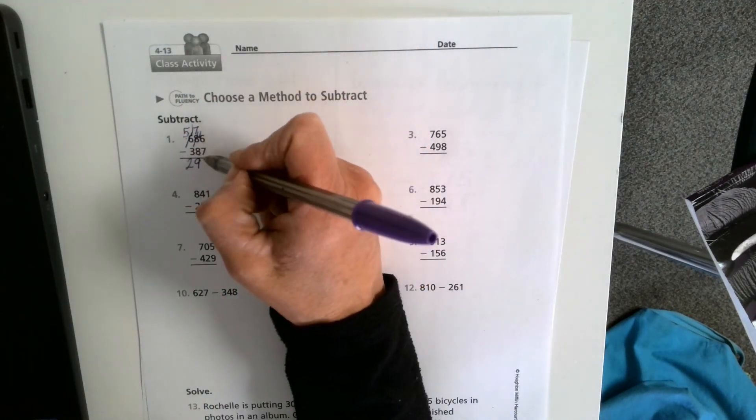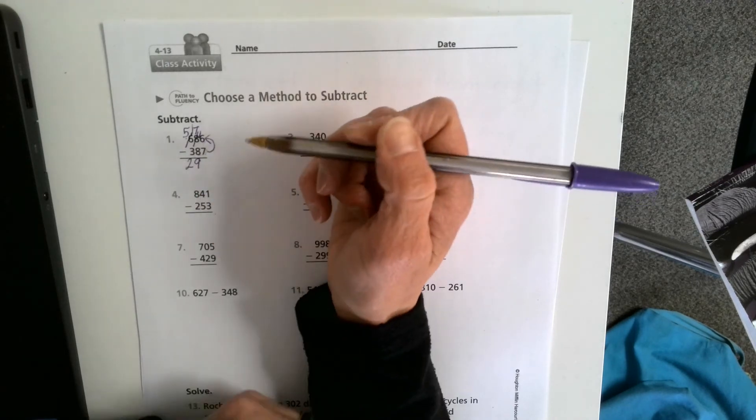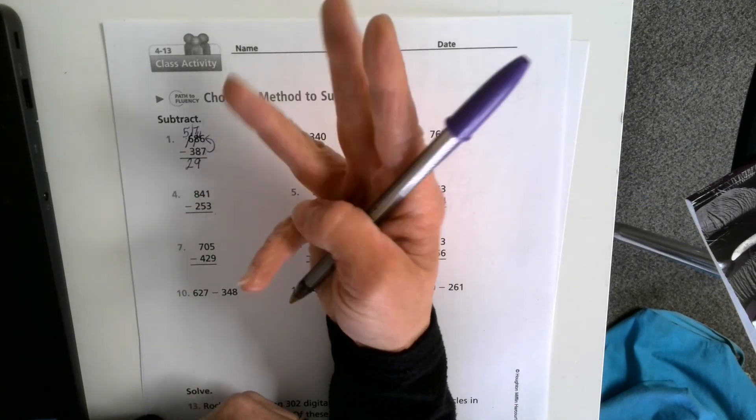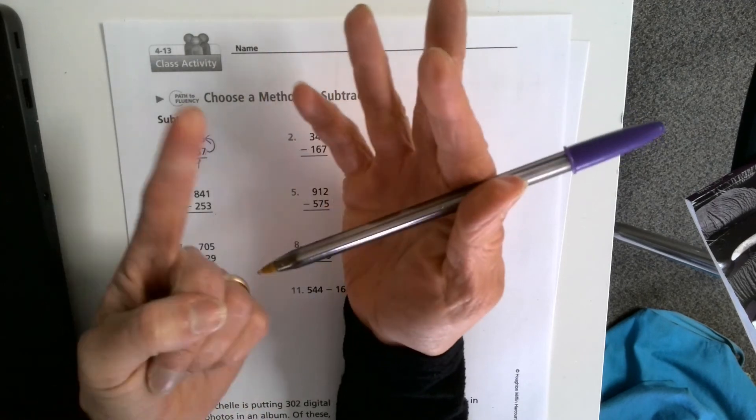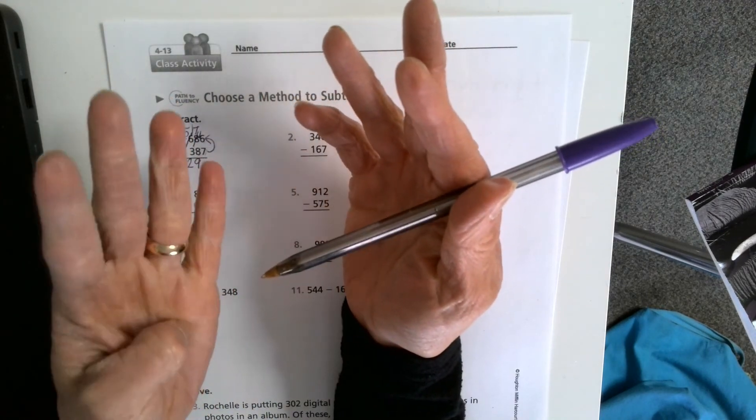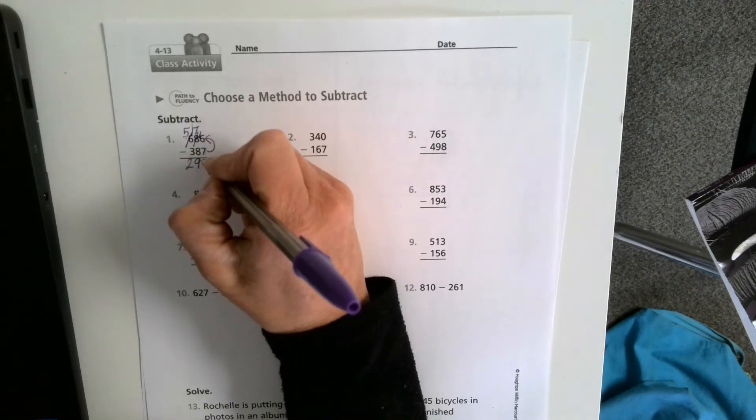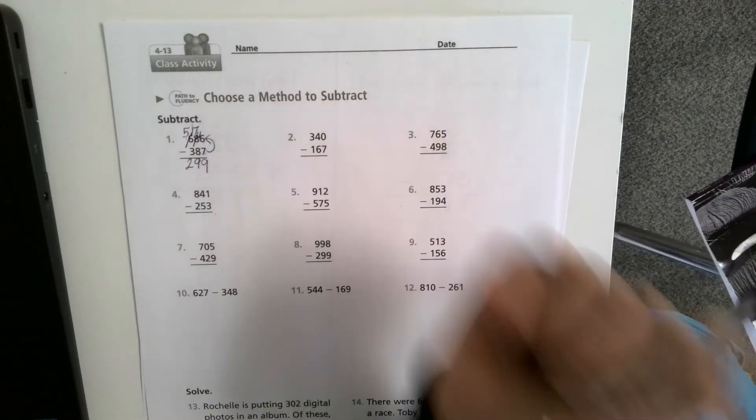16 minus 7, start at 7, count up to 16. 7 in my head. 8, 9, 10, 11, 12, 13, 14, 15, 16. I get 9 again. So 299 would be the correct answer.